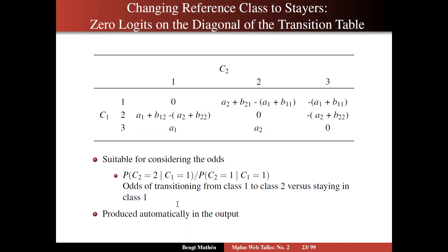That is, you want to know what the odds are to actually move forward in reading knowledge from class one to class two versus staying in class one. This kind of display — these kinds of odds — are produced automatically in the output, so you don't have to worry about it. But this is how it's done internally, and sometimes you may want to do it yourself.